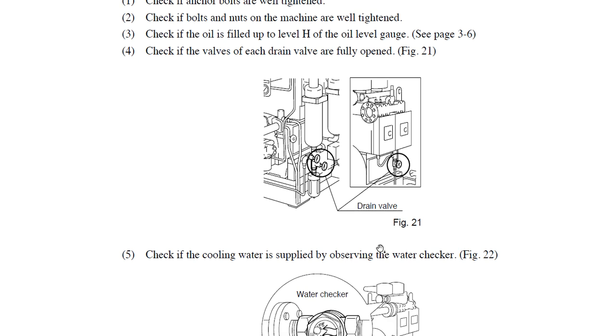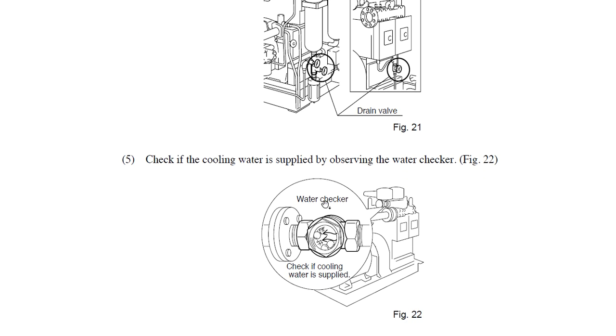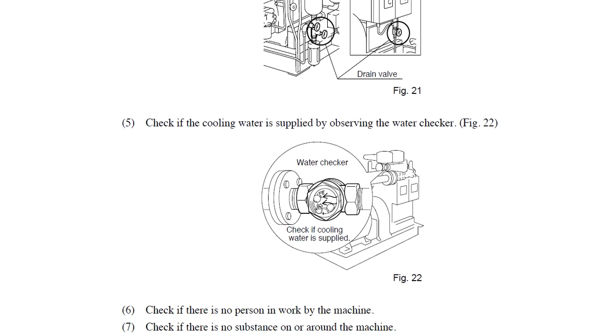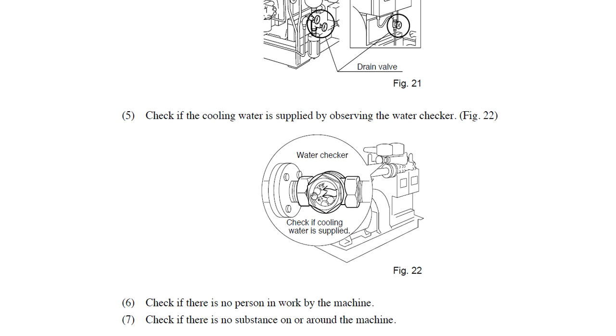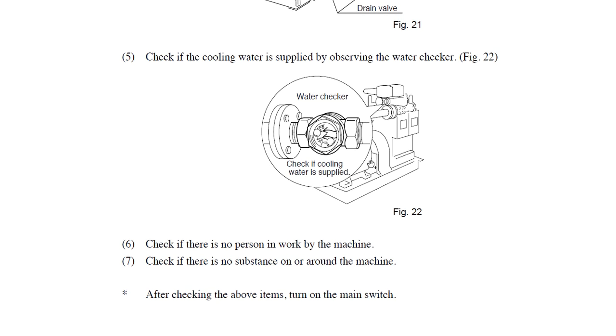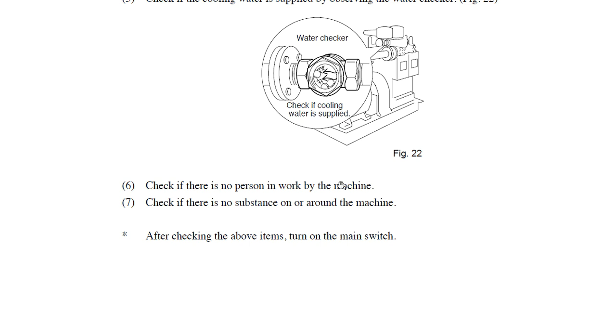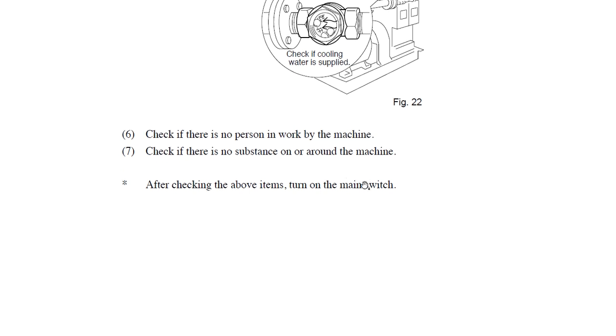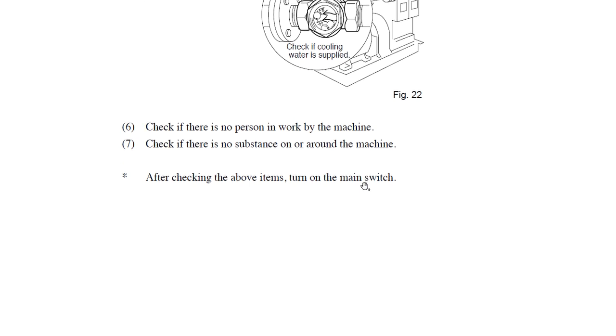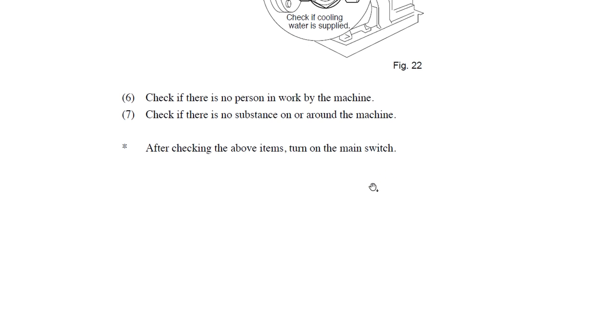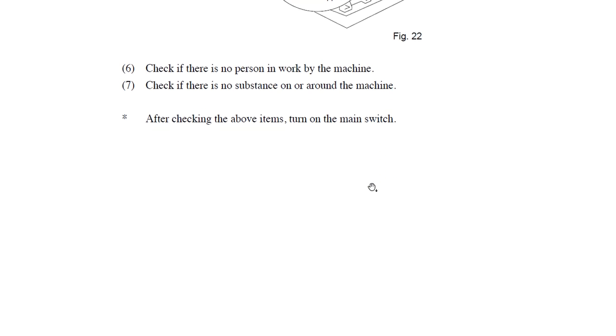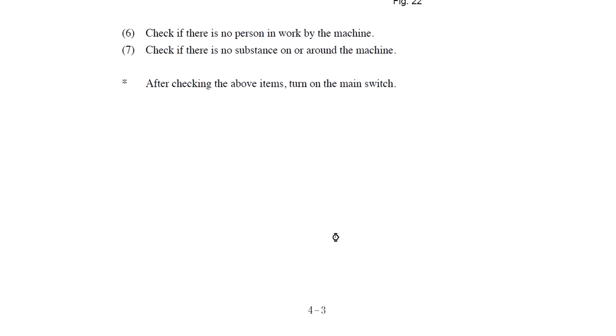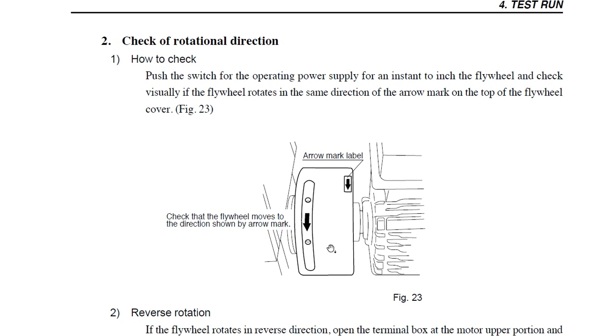We check also the cooling water that is supplied. There are some plastic circles here inside which show you there is flow of the water. Check that no person is working on the machine and that there is no substance around the machine. If you have made all the checks, you can switch on the power.